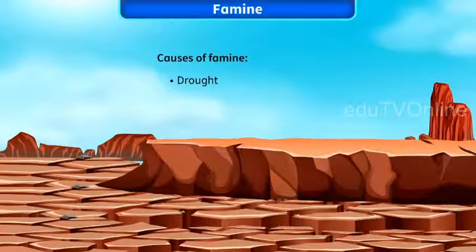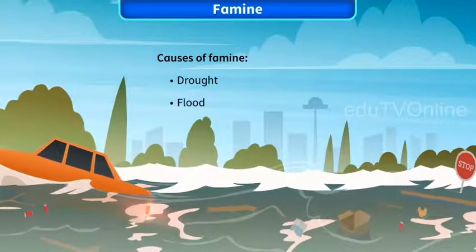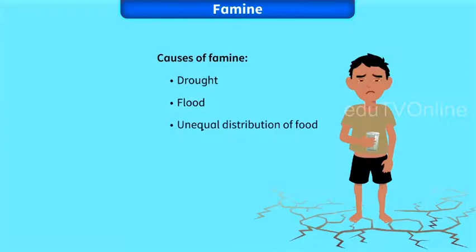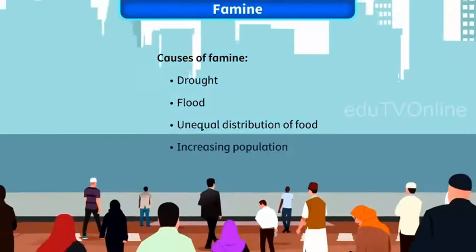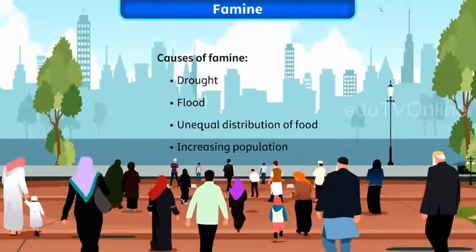Drought, flood, unequal distribution of food, and increasing population are some causes of famine.